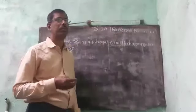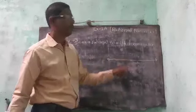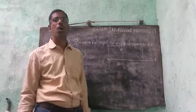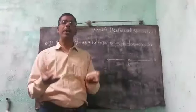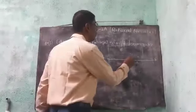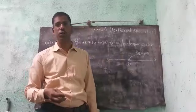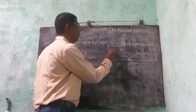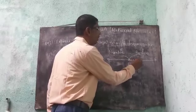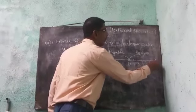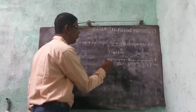At first, draw a number line and mark 0 on it. The right side of 0 is positive and the left side of 0 is negative. Draw numbers 1, 2, 3, 4, 5 going to positive infinity, and minus 1, 2, 3, 4 going to minus infinity.